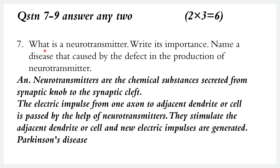Questions 7 to 9. What is a neurotransmitter? Discuss the importance and production of neurotransmitters. Neurotransmitters are the chemical substances secreted from the synaptic knob to the synaptic cleft.